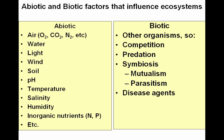Abiotic factors include things like temperature, salinity, water, oxygen, sunlight, rocks, and dirt. The biotic, or living, factors include all living organisms such as bacteria, fungi, plants, animals, and protists.